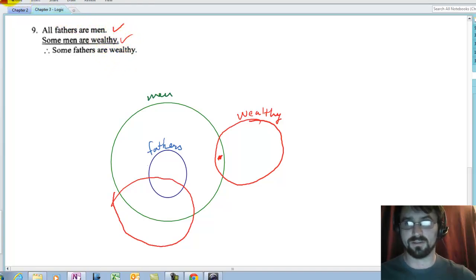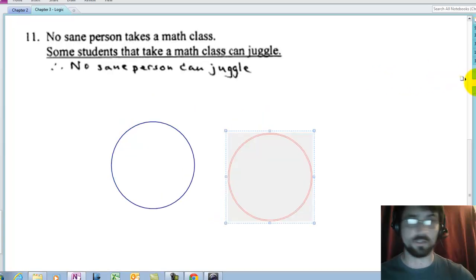But in fact, there's a loophole. It's not necessarily so because I can draw the picture like this. It could be that no fathers are wealthy. Those could be disjoint sets and I still have the overlap required by the second premise. So this is not valid. The conclusion, some fathers are wealthy, is not necessarily part of the picture.